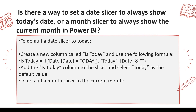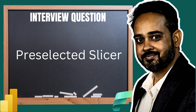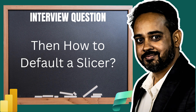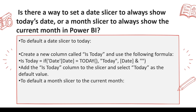Power BI does not have any functionality to default the slicer using a measure. There is something known as a pre-selected slicer that can do that, but the usual slicer doesn't. As of the time of this recording, Power BI slicer does not have an option to default it using a measure. What you have to do is add additional static columns in your table that will default it to today or this month.